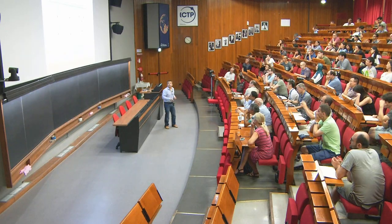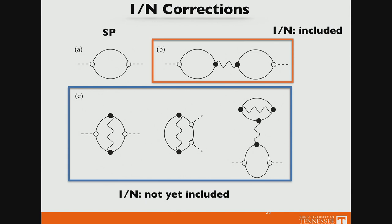Going beyond the saddle point gives four diagrams to order 1/N: each RPA propagator (wavy line) introduces a factor of 1/N, and each internal loop introduces a factor of N. Focusing on the key diagram: the RPA propagator is evaluated at the same K and omega as the external line, so poles of the RPA propagator become poles in S(Q,ω). This is the only diagram that can introduce poles — magnon poles — into S(Q,ω).